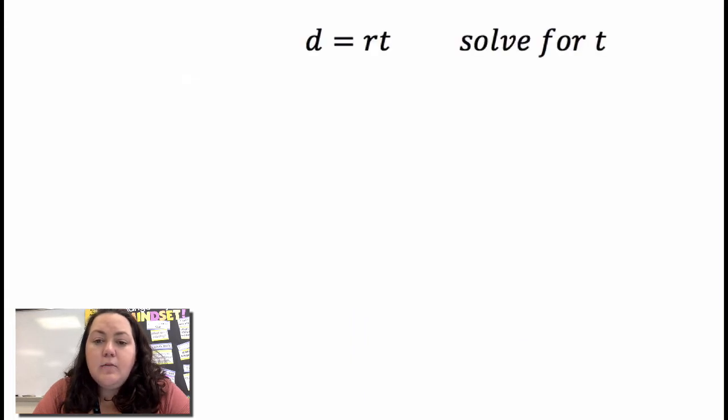Alright, in this one d equals rt solve for t so I want to get t by itself. It's connected to an r by multiplication so I'm going to divide both sides by r.